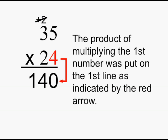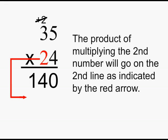The product of multiplying the first number was put on the first line, as indicated by the red arrow. The product of multiplying the second number will go on the second line, as indicated by the red arrow.